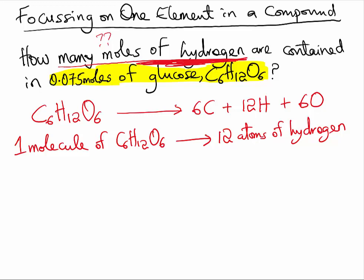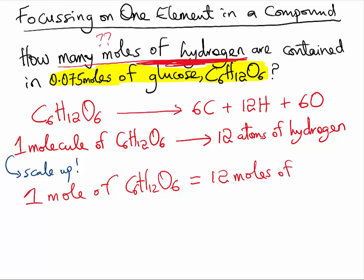This relationship can be scaled up. And we can interpret it when we scale it up as one mole of C6H12O6 will give us 12 moles of hydrogen.